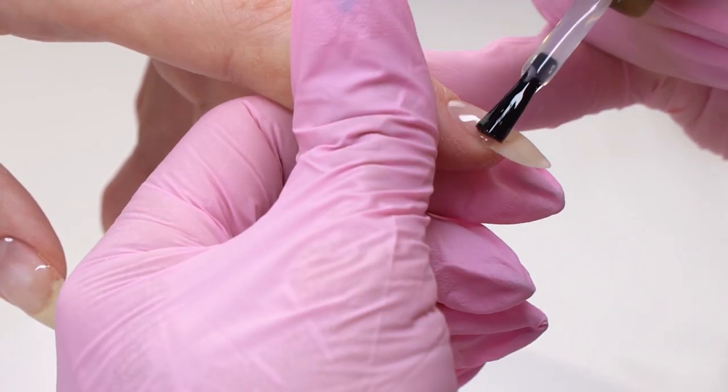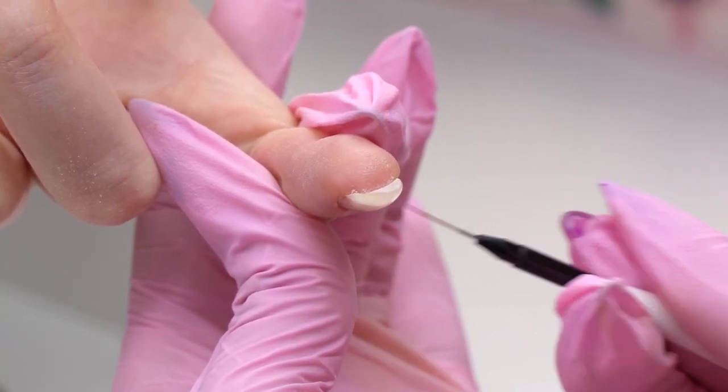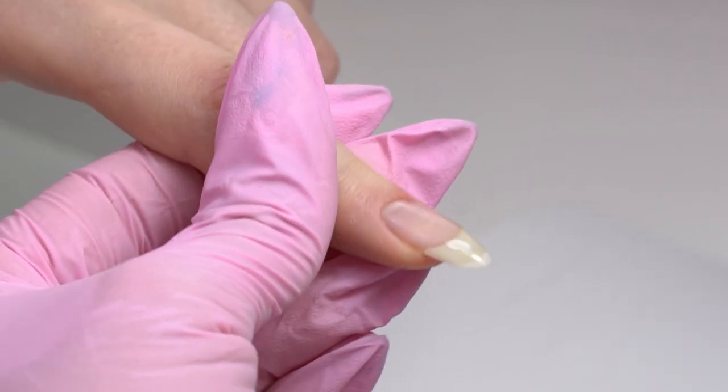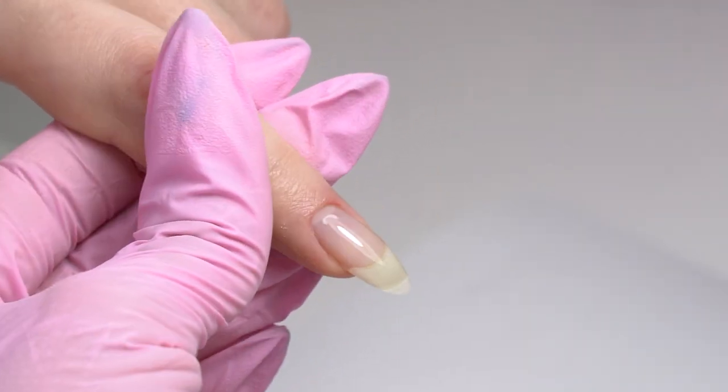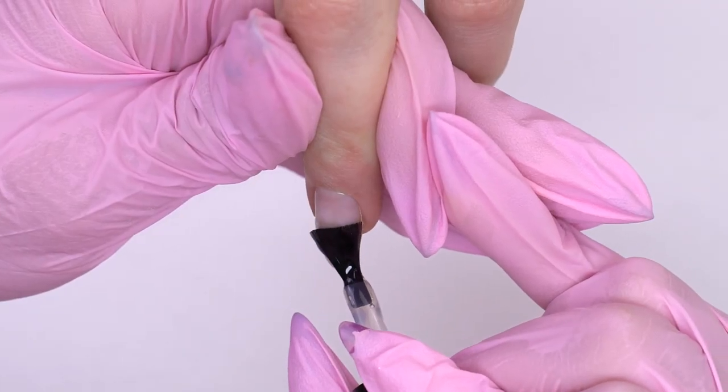For the nail not to look wide, make sure that the gel doesn't flow on the sides. So before curing it in the lamp, I turn the nail over, wait for the gel to flow to the center, and only then send it to cure.